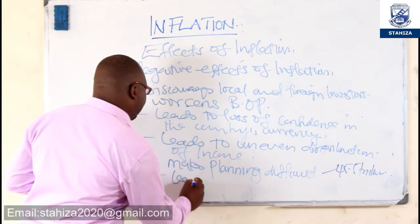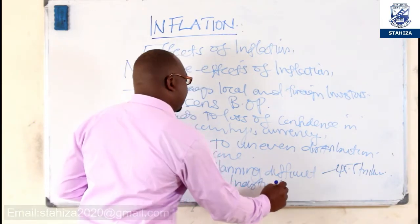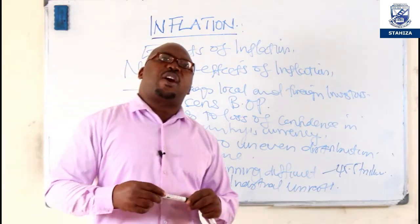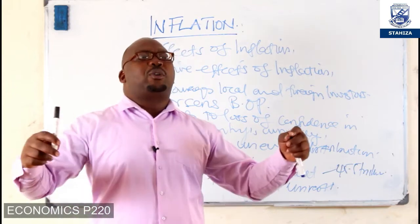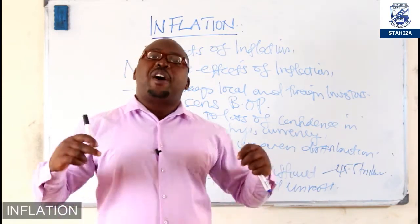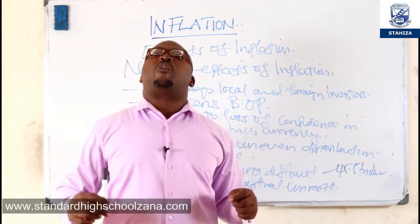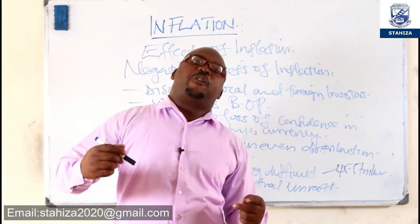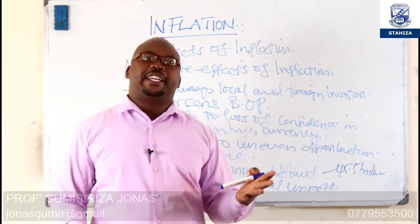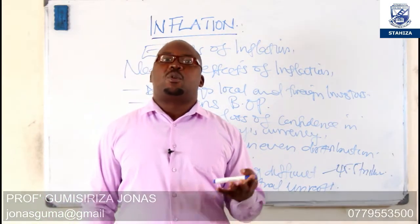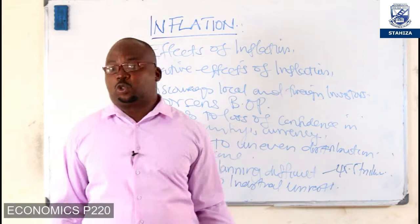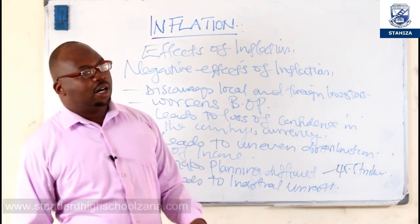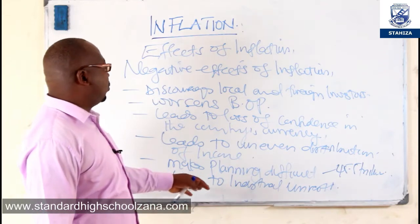Inflation leads to industrial unrest. Because of the rising cost of living brought about by increasing prices, workers must by all means demand higher wages. When they demand higher wages and go on strikes, the output of firms is affected — through sit-down strikes and work stoppages — so firms cannot produce their usual amount of output.